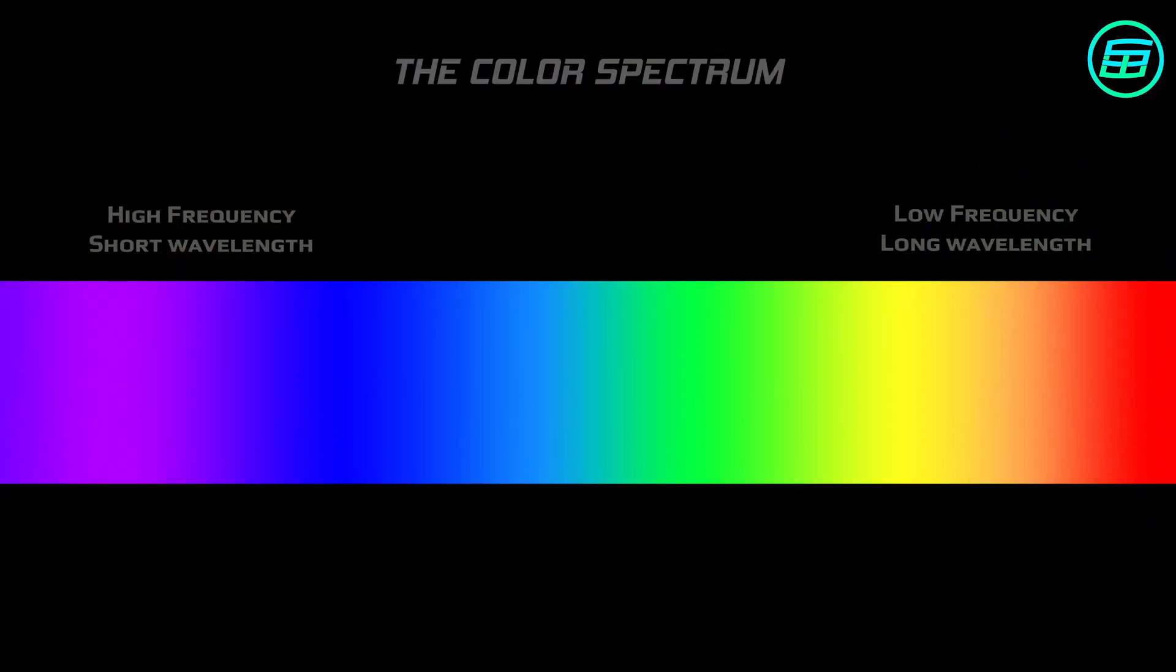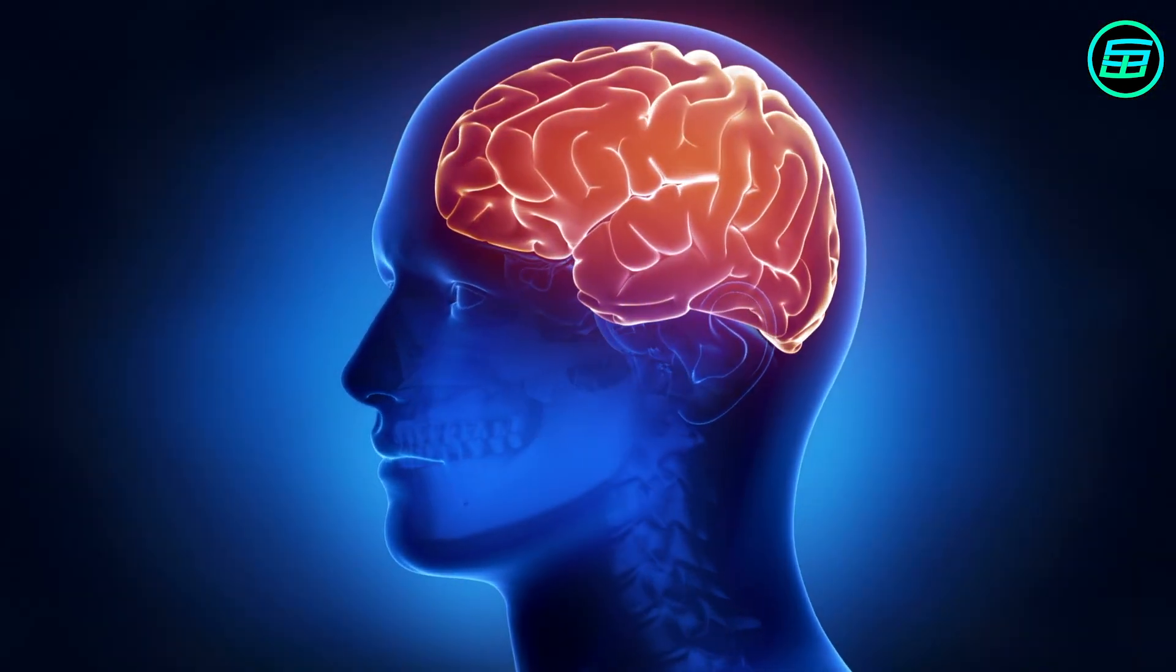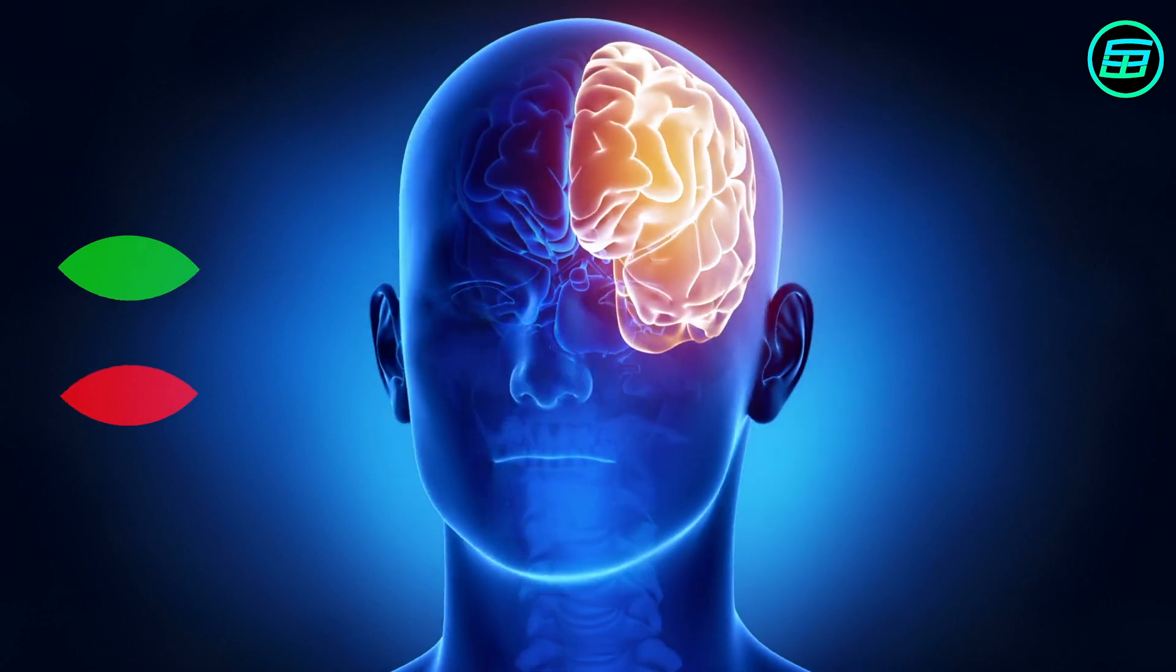Because yellow light is intermediate in wavelength between red and green light, if yellow light reaches the cone cells in our eyes, both the red-sensitive and the green-sensitive cone cells send electrical signals to the brain. Our brains interpret this combination of electric signals as yellow.